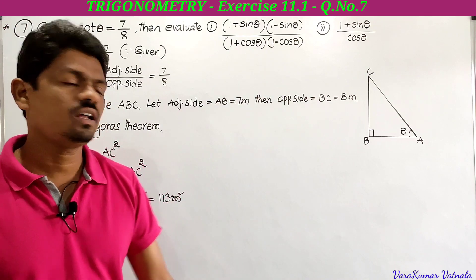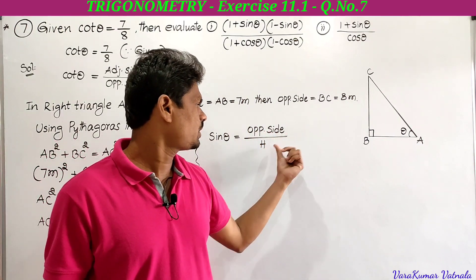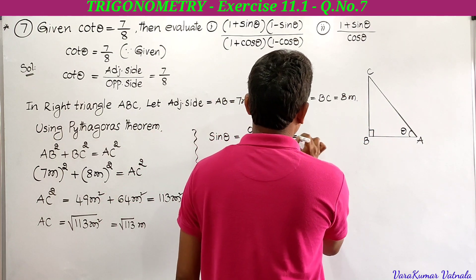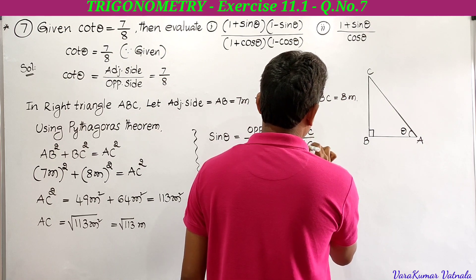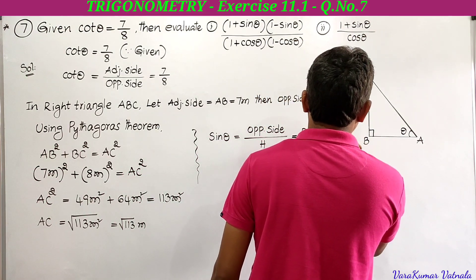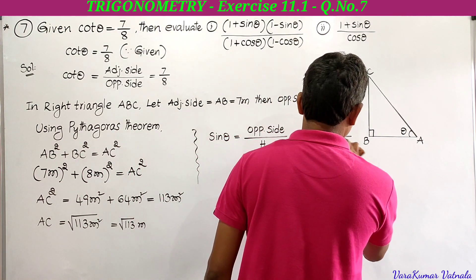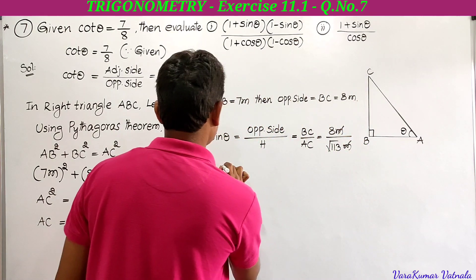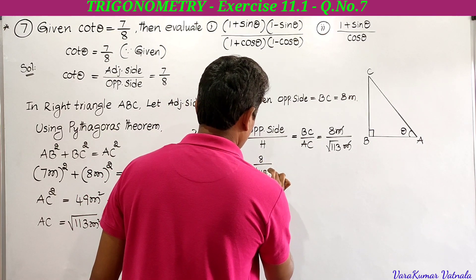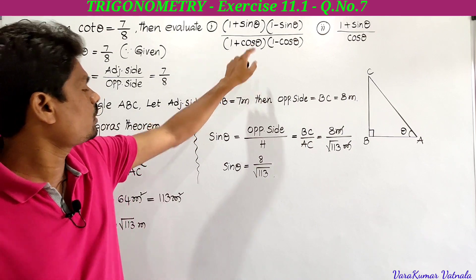Now we find sin theta and cos theta. Sin theta equals opposite side to theta divided by hypotenuse, that is BC by AC. BC equals 8m and AC equals square root of 113m, so sin theta equals 8m divided by square root of 113m. The m's cancel, giving sin theta equal to 8 by square root of 113.